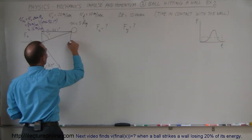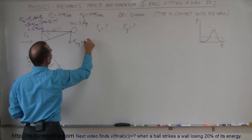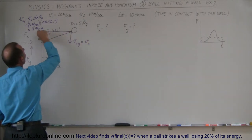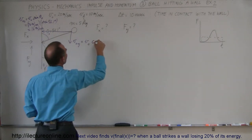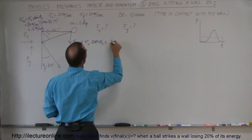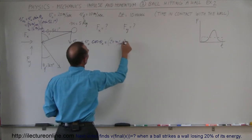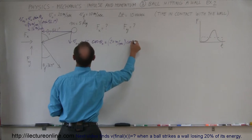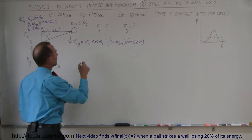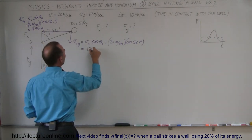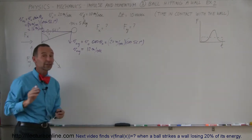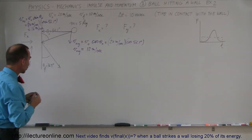In the y direction, the initial velocity is v initial times the cosine of theta initial, because it's adjacent to the angle. That's 20 meters per second times the cosine of 56.1 degrees, which is 0.6, so 0.6 times 20 equals 12 meters per second. Now we have the initial velocity in the x direction and the initial velocity in the y direction — the two components.